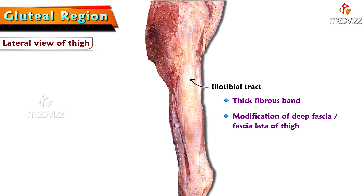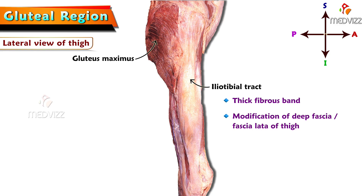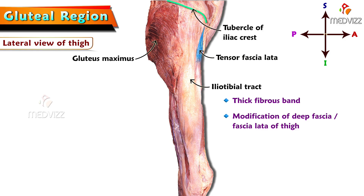On the posterior aspect, we can appreciate the insertion of gluteus maximus muscle into the iliotibial tract, which is well demonstrated in this image. The iliotibial tract also receives attachment of tensor fascia lata from above. We can also appreciate the tubercle of the iliac crest, which gives attachment to the fascia lata that continues as the iliotibial tract.